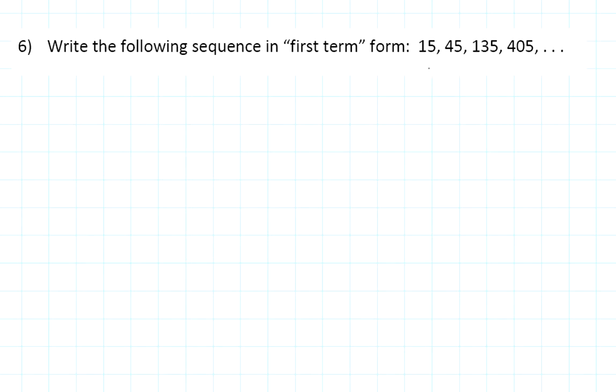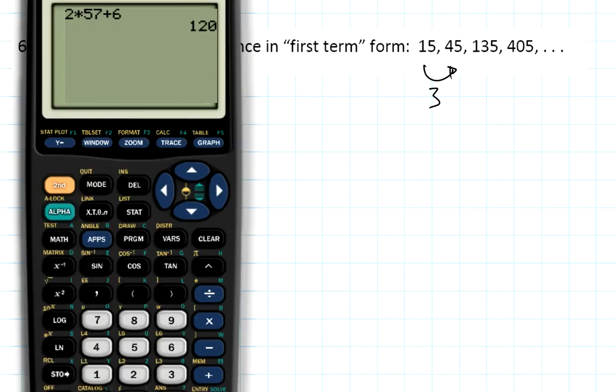Let me grab my calculator and verify that. So if I take 45 and I divide that by the previous term which is 15, I get that ratio is three. Let's extend this next one up: 135 divided by its previous term which was 45, and I get a ratio of three.